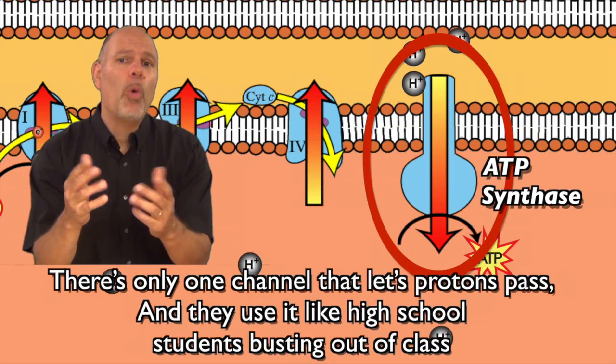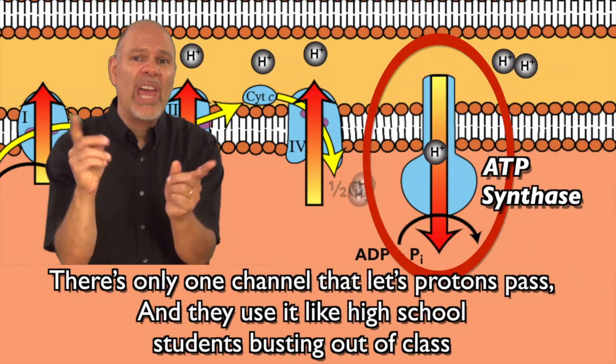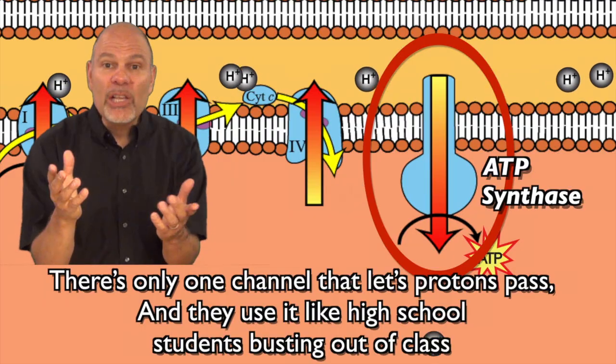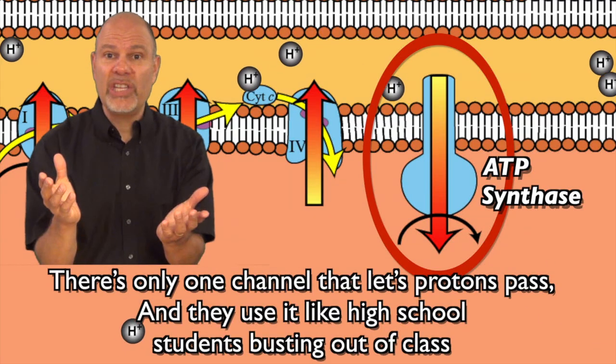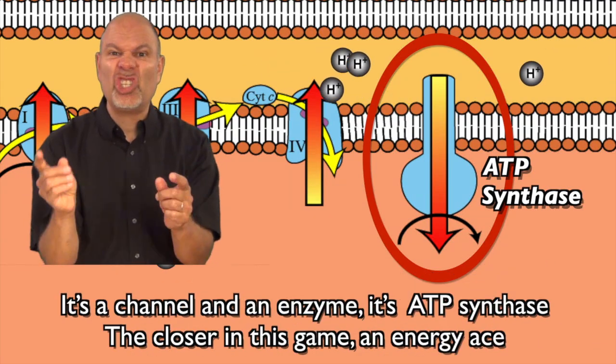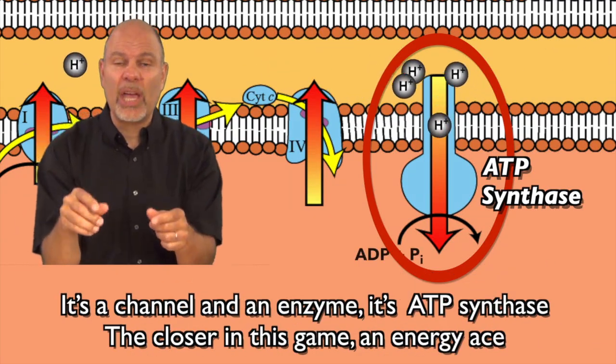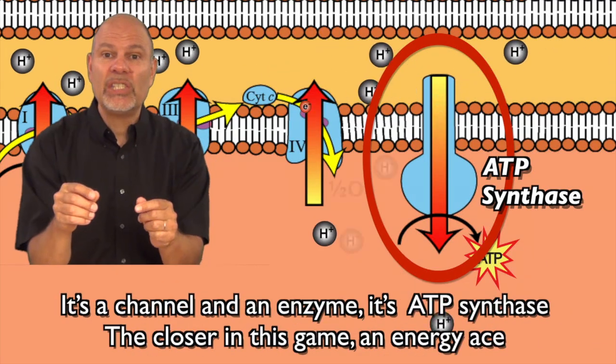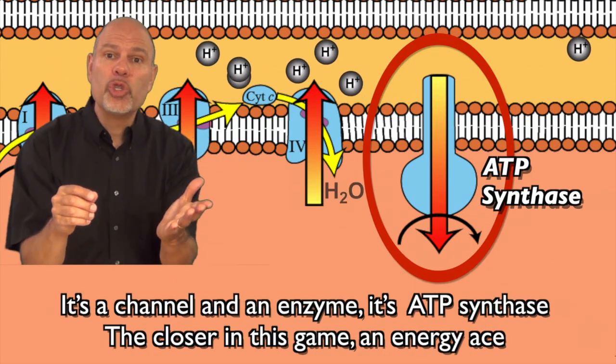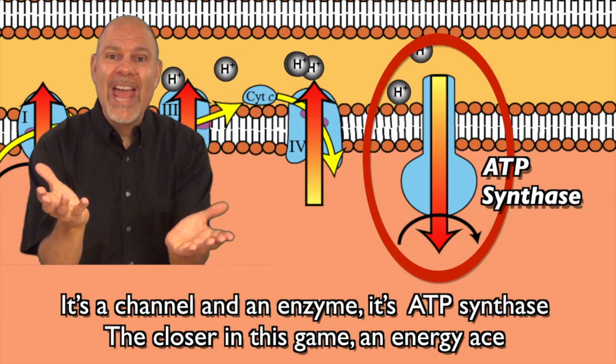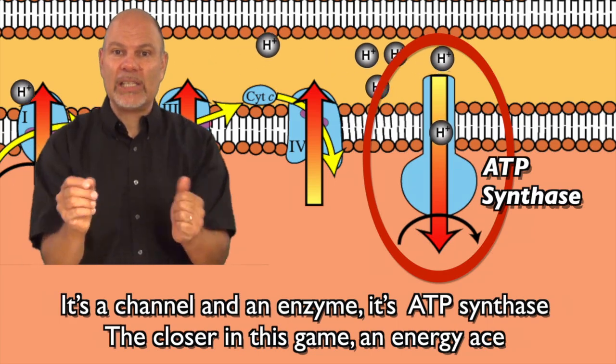There's only one channel that lets protons pass, and they use it like high school students busting out of class. It's a channel and an enzyme — it's ATP synthase, the closer in this game, an energy ace.